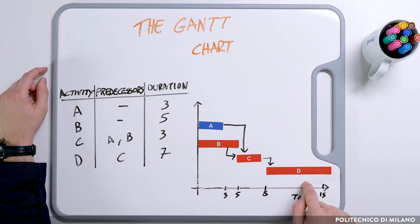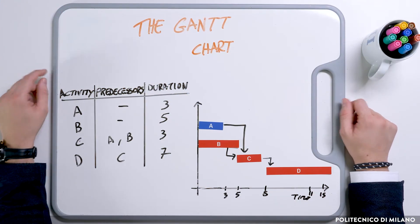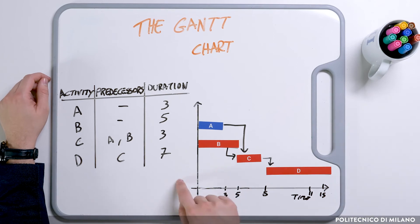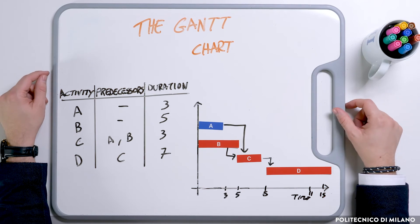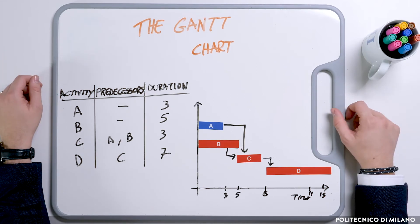B, C, and D are defined as the critical path — the activity chain that runs from the beginning to the end of the project, defining the project duration, which in this case is equal to 15. Please pay attention to a very relevant detail: this criticality is considered only regarding time. A critical activity is not, by definition, more important or more relevant than a non-critical activity. We are simply saying that from a time perspective, we should highly monitor these activities because there is no slack.